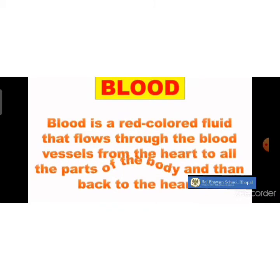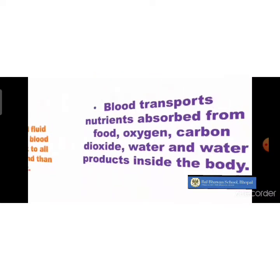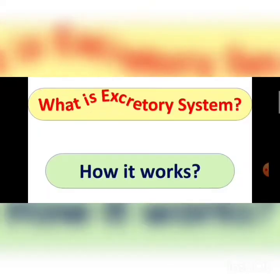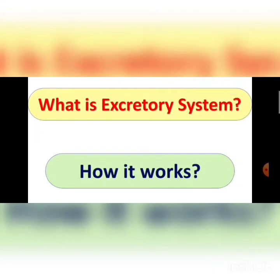Blood is a red color fluid that flows through the blood vessels from the heart to all the parts of the body and then back to the heart. The function of blood is to transport nutrients absorbed from food, oxygen, carbon dioxide, water, and other waste products inside the body system.